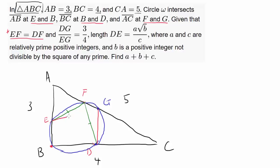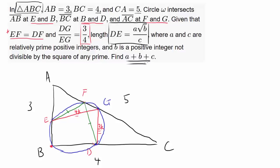We know DG over EG is 3/4. Let's draw DG and EG. DG is this line right here, and EG connects E and G. We know DG to EG is 3/4, so if DG is 3k then EG is 4k. This ratio of 3 to 4 seems familiar — it matches the sides of right triangle ABC. So maybe we have a similar triangle. We wish to find the length DE, which is in the form A√B / C, and we need to find A + B + C.